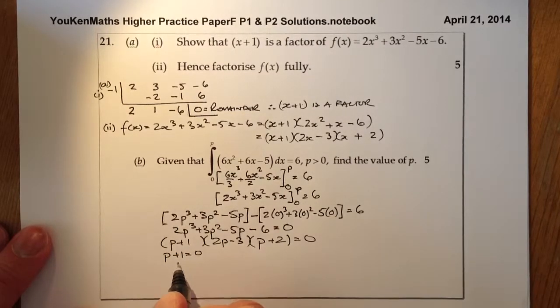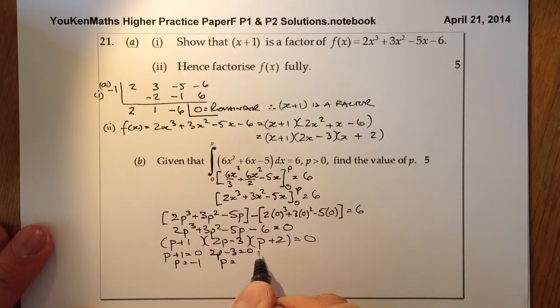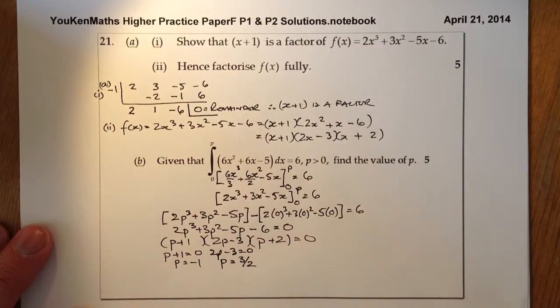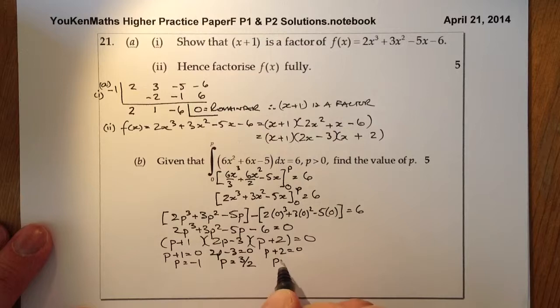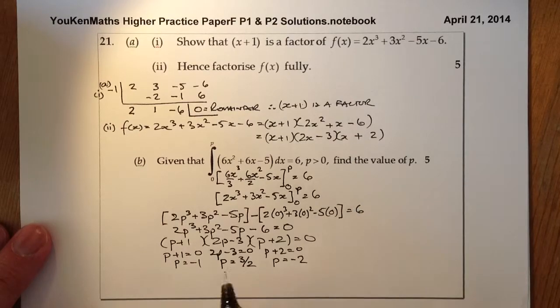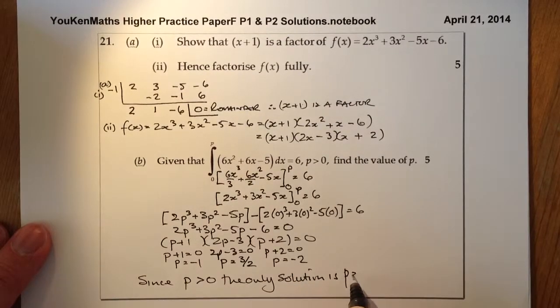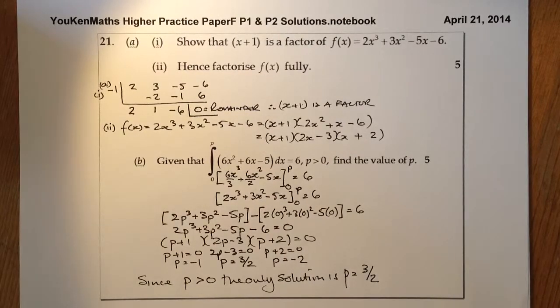I'll work out the value of p for each. p + 1 = 0, so p = -1. 2p - 3 = 0, so p = 3/2. p + 2 = 0, so p = -2. I'm not going to leave it like that, because I've been given that p > 0. Since p > 0, the only solution is p = 3/2. That's the question complete.